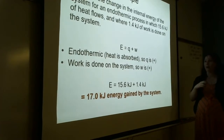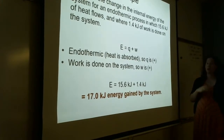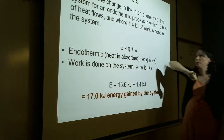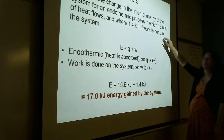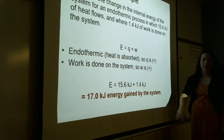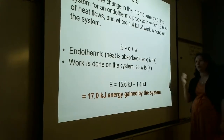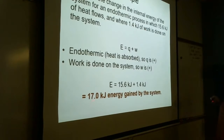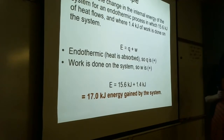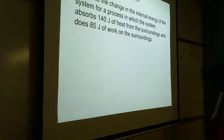Remember to look at the problem carefully. Endothermic means heat is going in — positive Q. Exothermic means heat going out — negative Q. If work is done on the system, W is positive; if done by the system, W is negative. That's why both values here are positive — neither 15.6 nor 1.4 are negative.